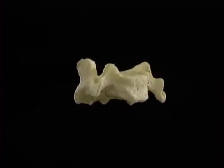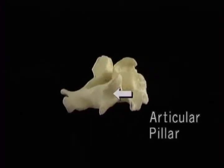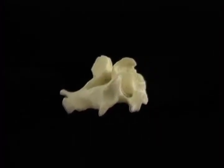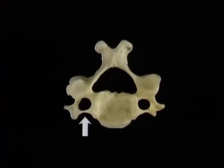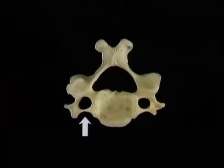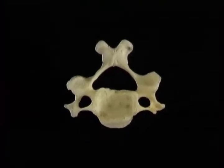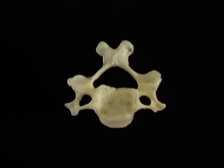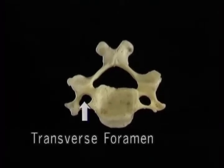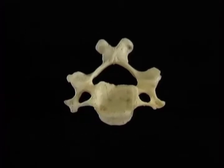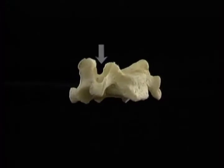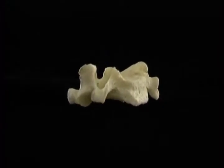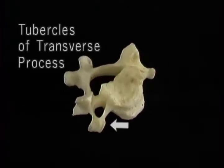The mass of bone between the articular facets is called the articular pillar. The transverse processes arise from the side of the body and also from the articular pillar. The transverse process of a cervical vertebra has a hole in it — the transverse foramen — through which the vertebral artery passes. The transverse process is shaped like a gutter pointing downwards, and ends in two tubercles, an anterior and a posterior, where the scalene muscles attach.